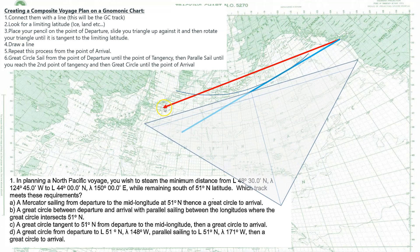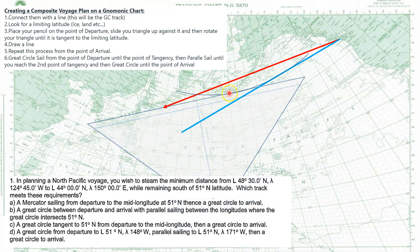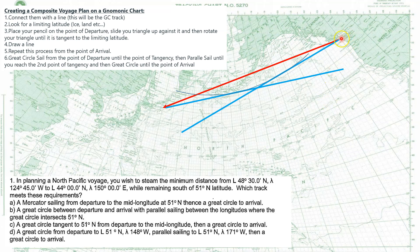Then you repeat the process from the arrival. You put your pencil there, put your triangle against that spot, and rotate it until it just touches tangent on that side. Draw a line there. Now you're going to great circle from the departure to wherever the tangent spot is — right about here — then parallel sail along 51°N, then pick up a new great circle from that tangent spot to the arrival. So we'll erase the rest and great circle to about here, parallel sail, then pick up the new great circle. That's how you do that.